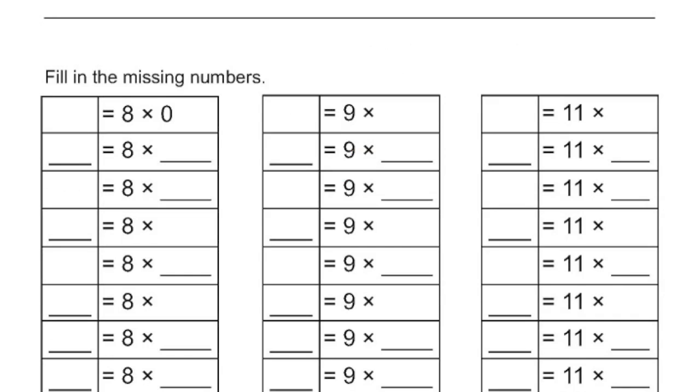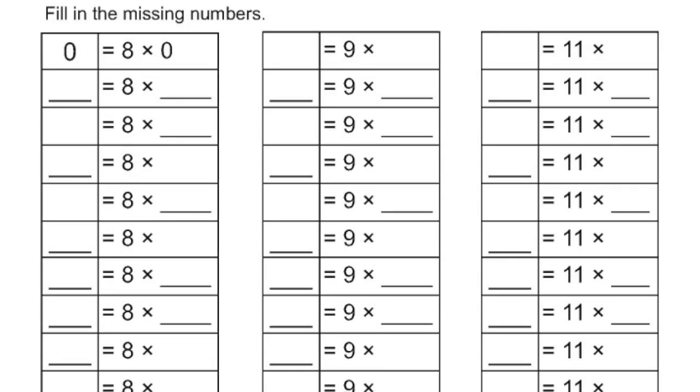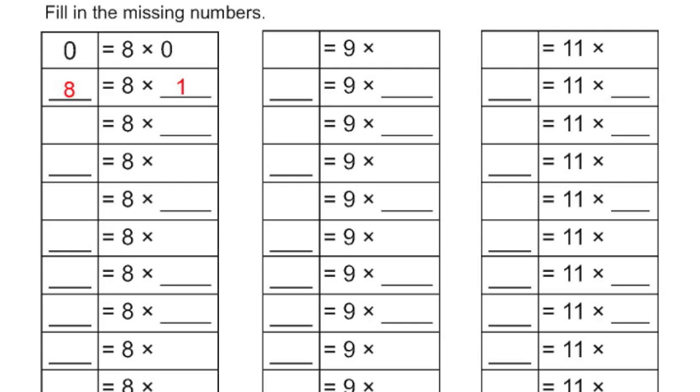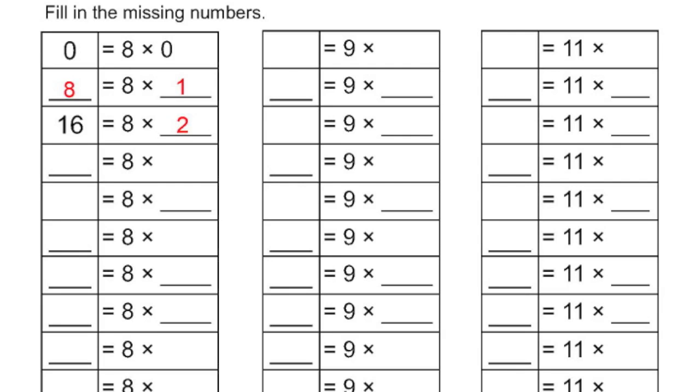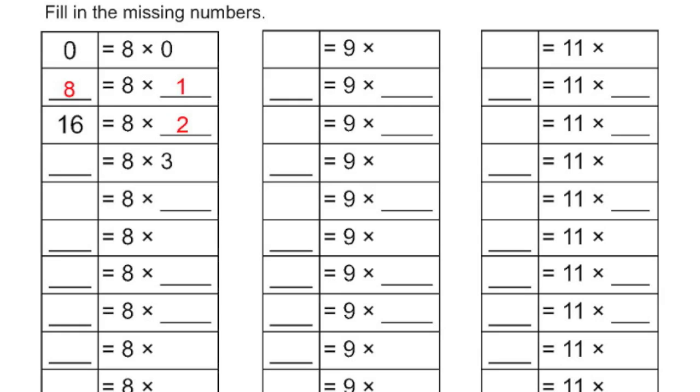Let's move down to fill in the missing numbers. I know that 8 times 0 equals 0. Anything times 0 equals 0. 8 times 1, well, if you multiply anything by itself, you're going to get itself. So that's 8. 16 out there is the same as 8 multiplied by 2. 8 times 3 equals 24.